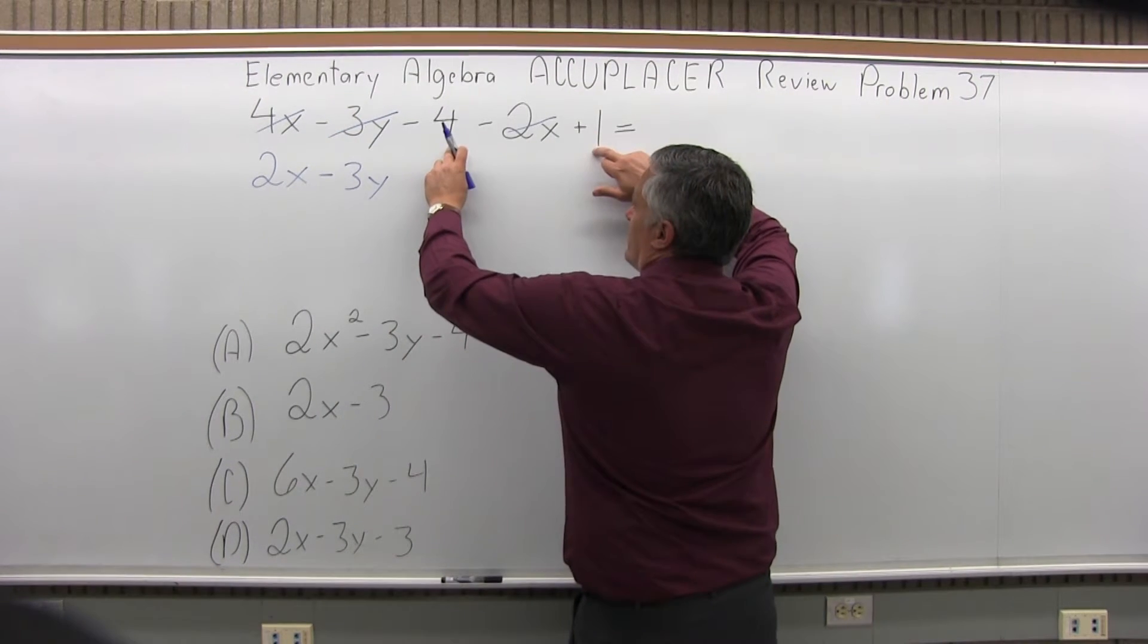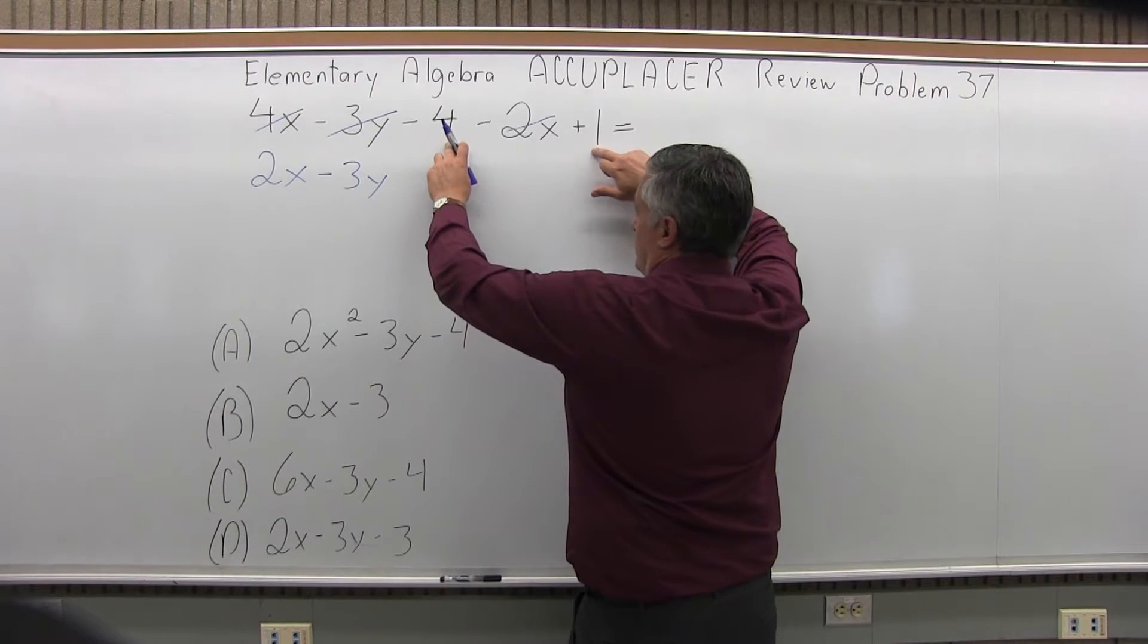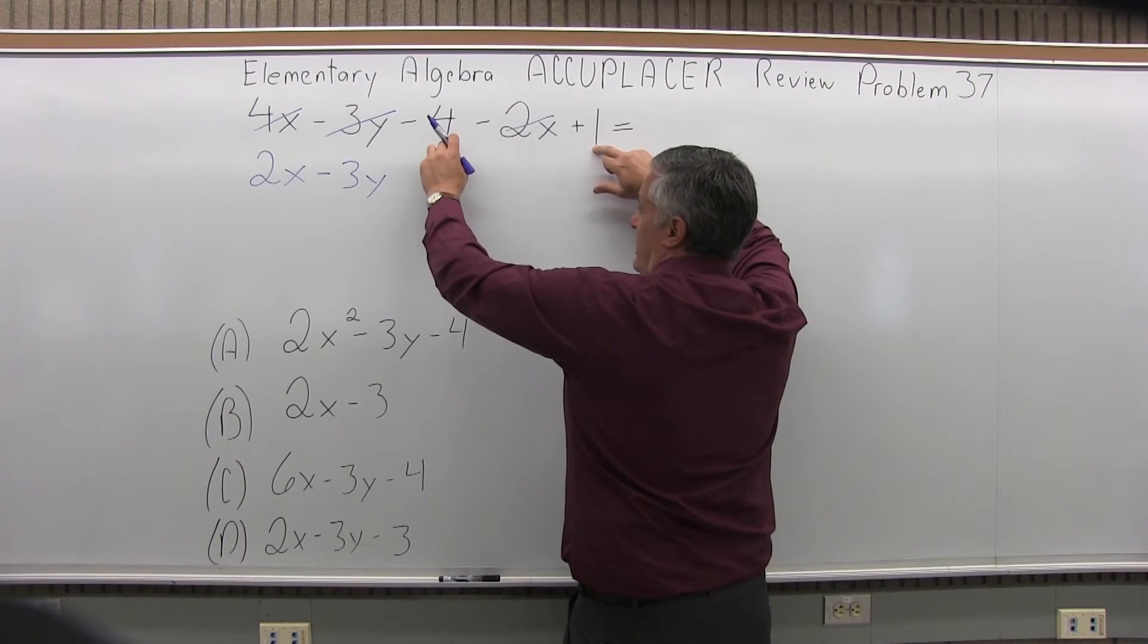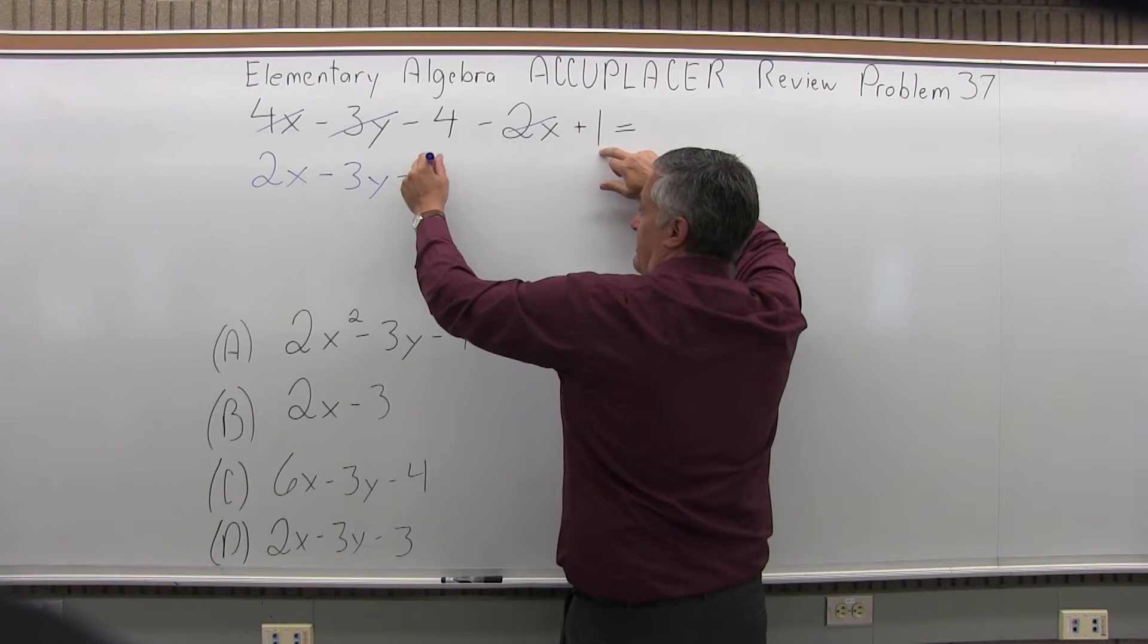And now I do have numbers showing up in two different places, numbers with no variables. So I have a negative 4, positive 1. When I combine negative 4 and positive 1, I get a minus 3.